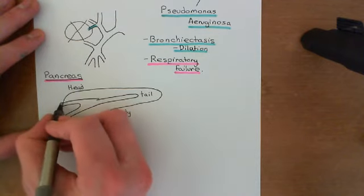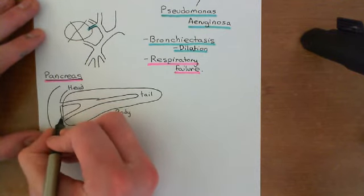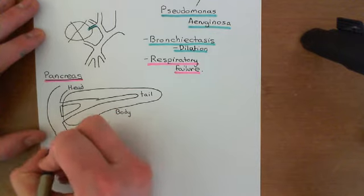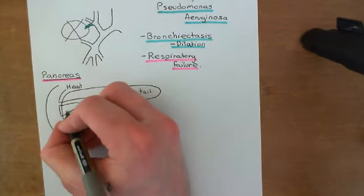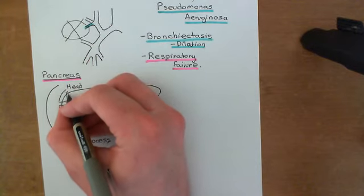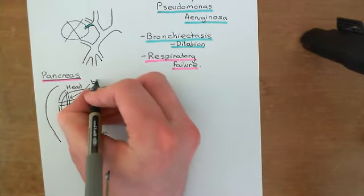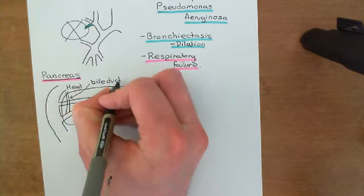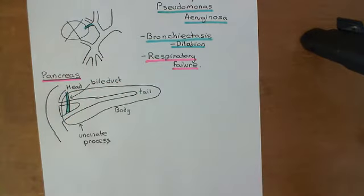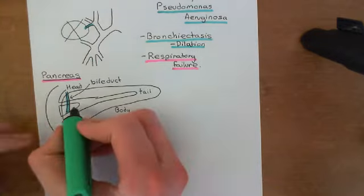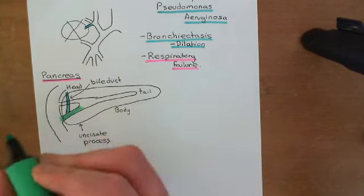Both the main pancreatic duct and the accessory pancreatic duct are going to join onto the duodenum. In addition, another duct joins onto the main pancreatic duct — this is the bile duct, going behind the pancreas and joining the main pancreatic duct from behind. The bile duct drains bile into the main pancreatic duct, and then this duct releases the combined contents from the pancreas and the liver into the duodenum.